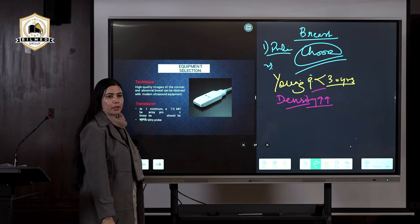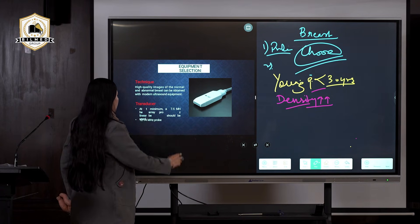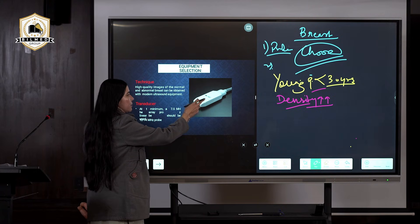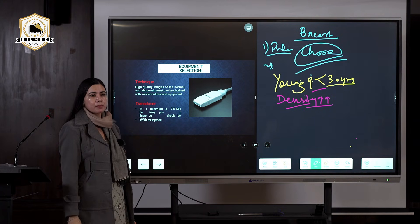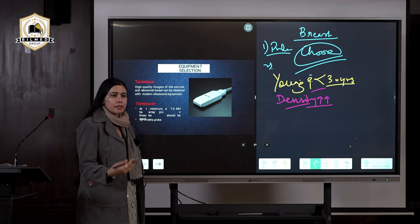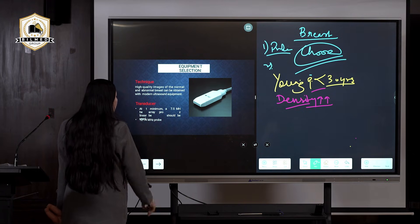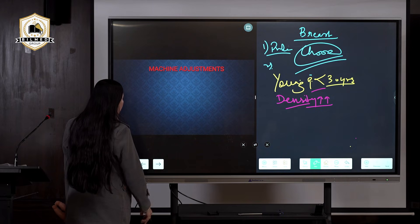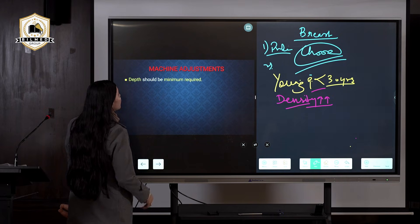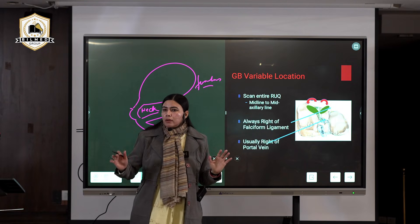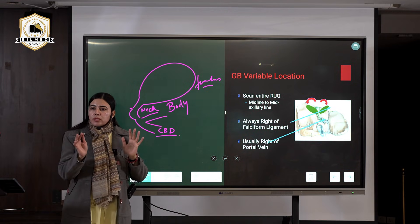This is the linear probe that I told you, the high frequency probe. Frequency below 7.5 megahertz is not acceptable because we want to scan this superficial organ, so we are not going to choose lower frequency.